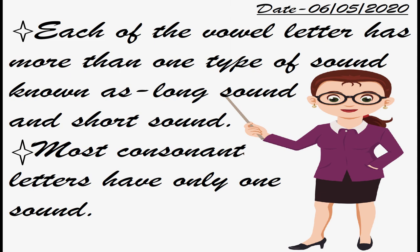This I will explain later, children. But you should know that every vowel has more than one type of sound. Then leave one line and in the next line write: 'Most consonant letters have only one sound.' Like B has only one sound — it doesn't have any other sound. Similarly, most of the consonant letters have only one sound.